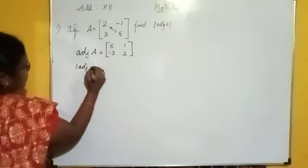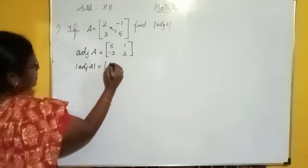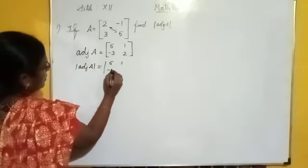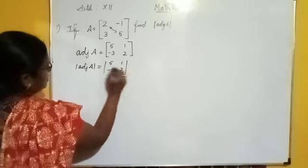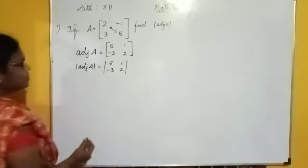After that, we can find the determinant of this adjoint. The adjoint matrix is 5, 1, minus 3, 2. The determinant of this matrix is calculated as follows.